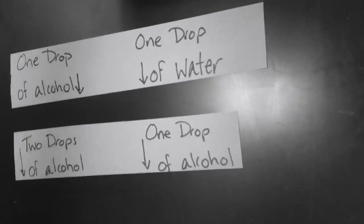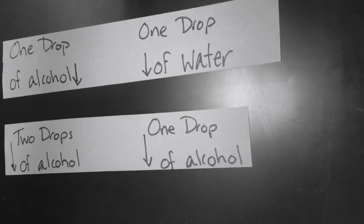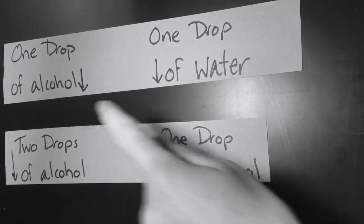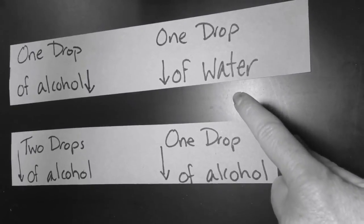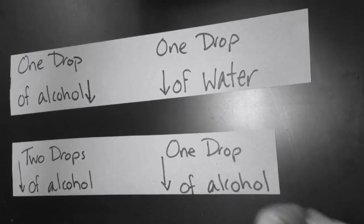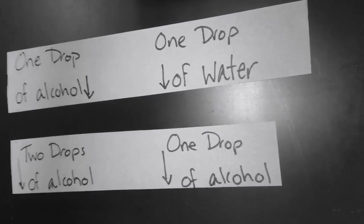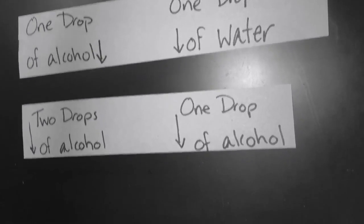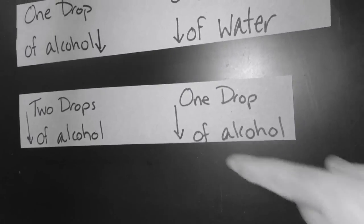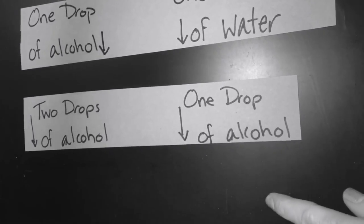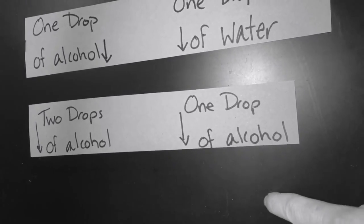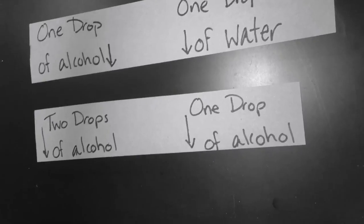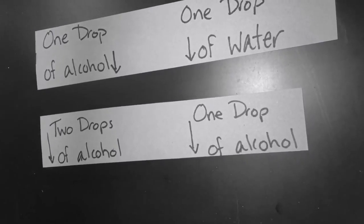The setup is right here. The first experiment is one drop of alcohol versus one drop of water, and I'm gonna put them down at the same time on time-lapse and observe what happens over time. Then we have two drops of alcohol versus one drop of alcohol - I'm gonna do that at the same time also on time-lapse and we will observe all of those things.